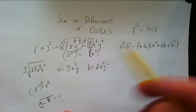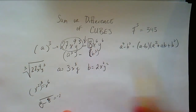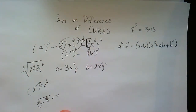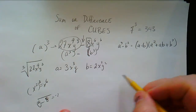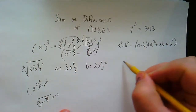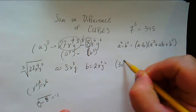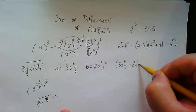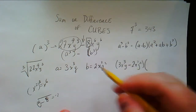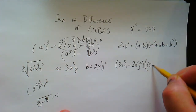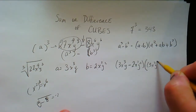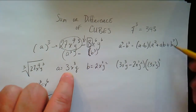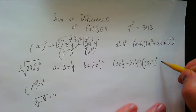All right, so now we just got to plug these values in. We're gonna have to use parentheses. So here's what we got: we got a, which is 3x cubed y, minus b, which is 2x squared y squared. Then a squared — we've got to use parentheses here because we're gonna mess it up if we don't. Take the whole thing and square it.